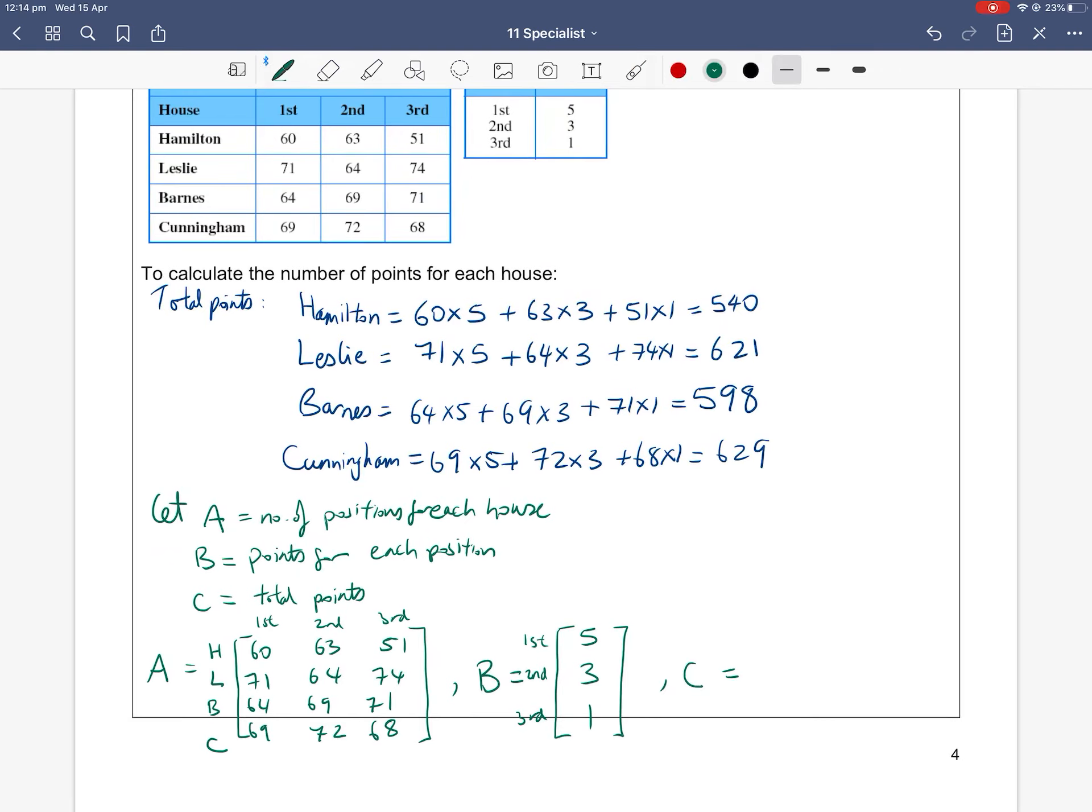And then this third matrix, which I called C, I said it's the total points for each house. So what does that mean? I have four houses—H, L, B, and C. We got the total number of points by doing this calculation of multiplying and adding things together. So if I summarized, H house got 540 points, L house got 621 points, B house got 598 points, and C house got 629 points. So I summarized the total points information into a four by one matrix.